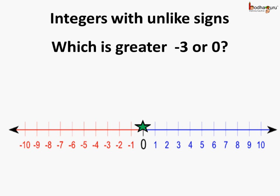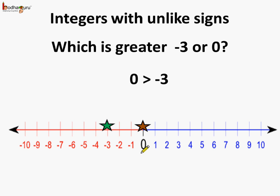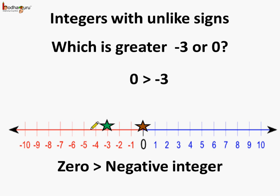Which is greater — minus 3 or 0? This is minus 3 and this is 0. Since minus 3 lies on the left side of 0, we can say minus 3 is less than 0, or 0 is greater than minus 3. In general, 0 is greater than any negative integer, because all negative integers lie on the left side of 0.